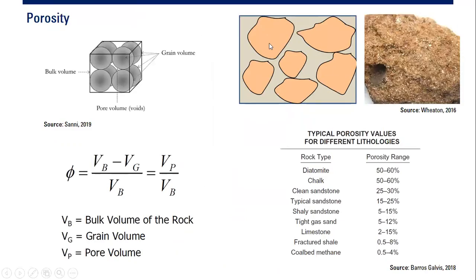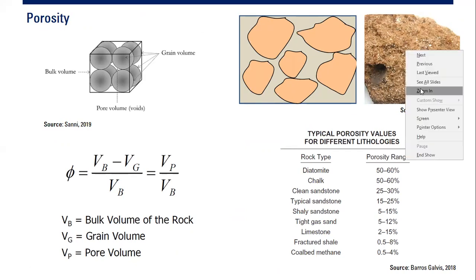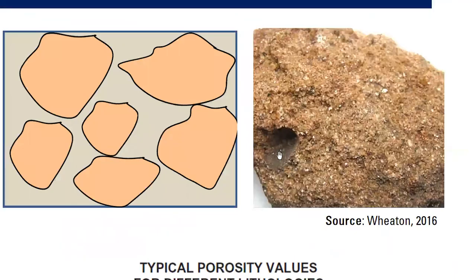Here you can see another picture of rock grains. The void space between the grains is the pores, and the volume of it we call pore volume. You can see this rock has big holes — maybe this is vug — but we have porosity or pores within this rock.